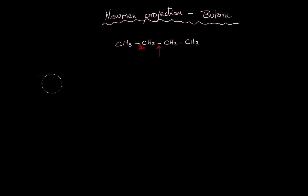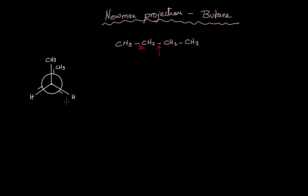Drawing the Newman projection: I'll draw the back carbon, then the front carbon, then the bonds. For the substituents, I have CH3 on each carbon and two hydrogens on each. I will start with the zero degree dihedral angle between the two CH3 groups — that's the zero degree conformation.